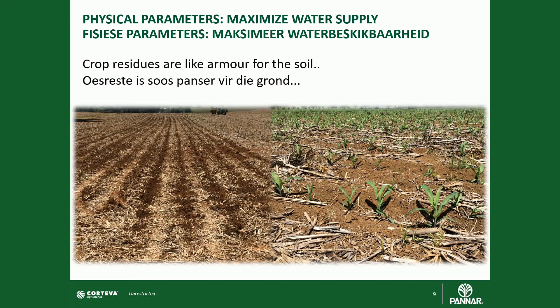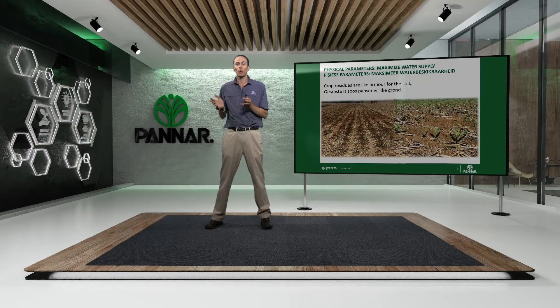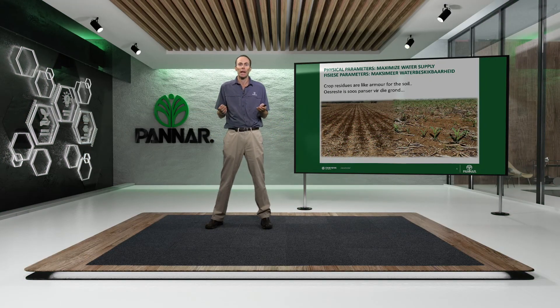Crop residues on the soil surface will also help reduce evaporation out of that soil surface, which will allow more moisture to be available in the soil for your crop. Residues at the surface also help slow down surface flow of water, allowing it more opportunity to percolate down into the profile. These crop residues on the surface will also, with time, add to and start to build organic matter content in the soil, with all the very positive attributes that increased organic matter will bring to your production system.